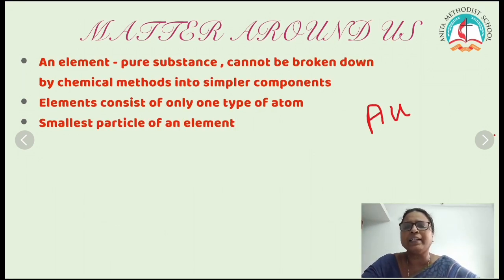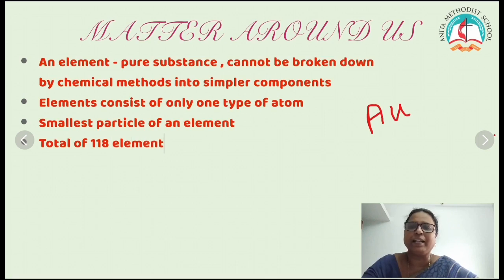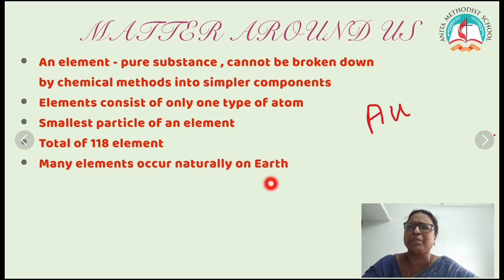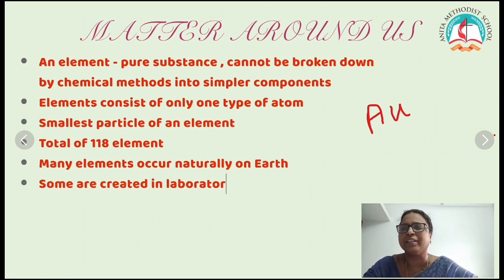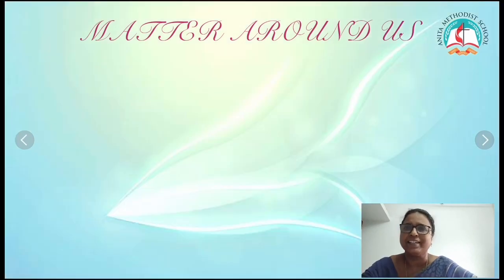An atom is the smallest particle of an element. So far we have found 118 elements in the world. Most of the elements are naturally found on Earth, but some few elements were created in laboratories by scientists.